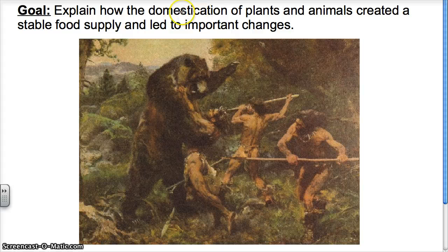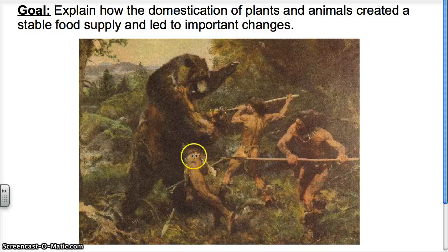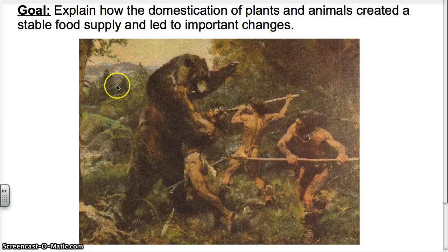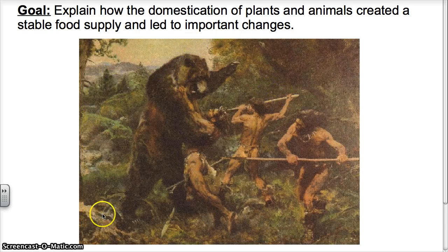Now when we talk about domestication, let's be clear — this means making plants and animals useful to humans. Now if you look at this bear, that's not domesticated. That is not useful. This gentleman seems to be having a rather difficult time with this bear. That's not a domesticated animal. This also shows us another thing that hunters and gatherers had to deal with: hunting was dangerous. This was not as safe a life as farming. So there are a lot of things that lead people to leave this type of lifestyle and become farmers.